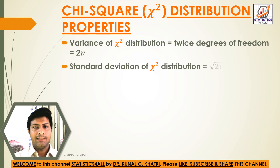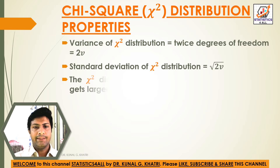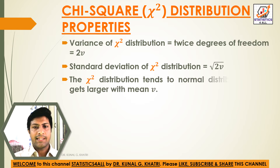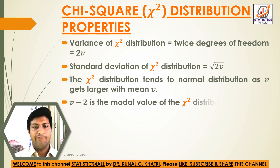The standard deviation of the chi-square distribution is equal to √(2v). The chi-square distribution tends to the normal distribution as v gets larger, with mean v. The modal value of the chi-square distribution is v minus 2.